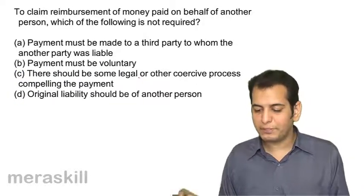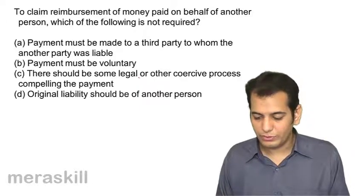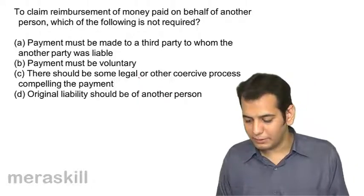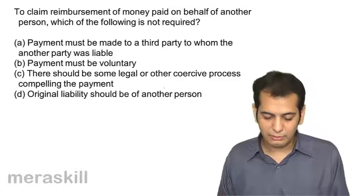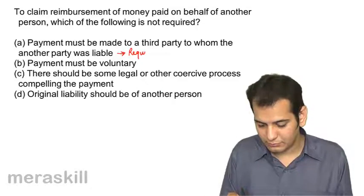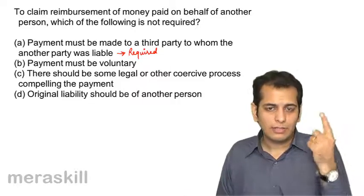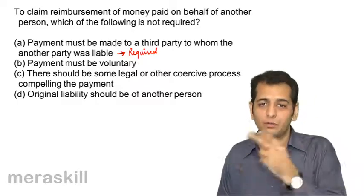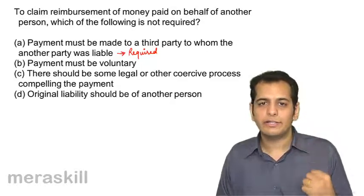To claim reimbursement of money paid on behalf of another person, which of the following is not required? Option A: payment must be made to a third party to whom the other party was liable. This is required. There are three conditions: the liability should be for another person, the payment should be made to the third party, and it should be to protect the interest.